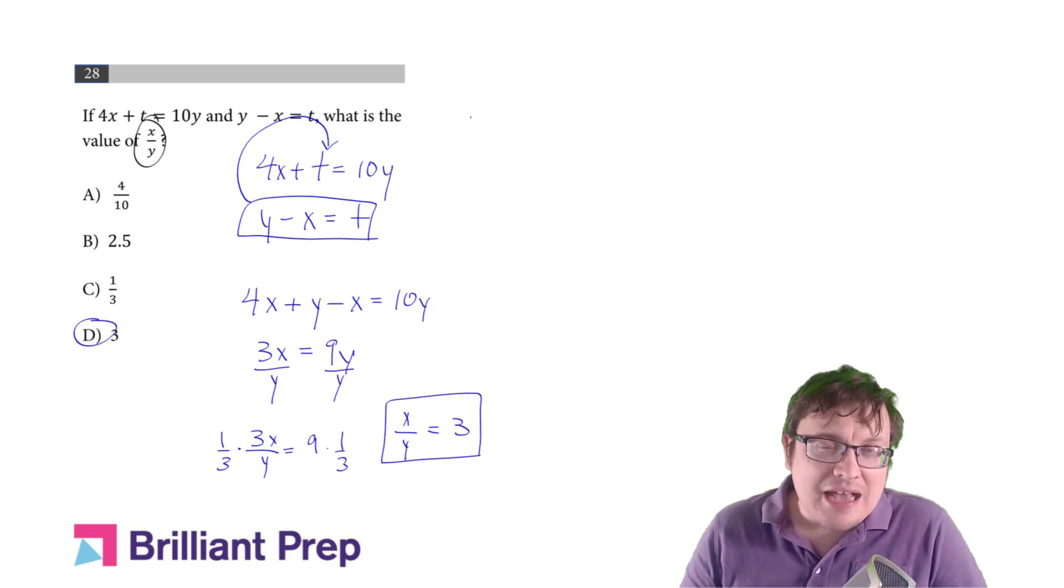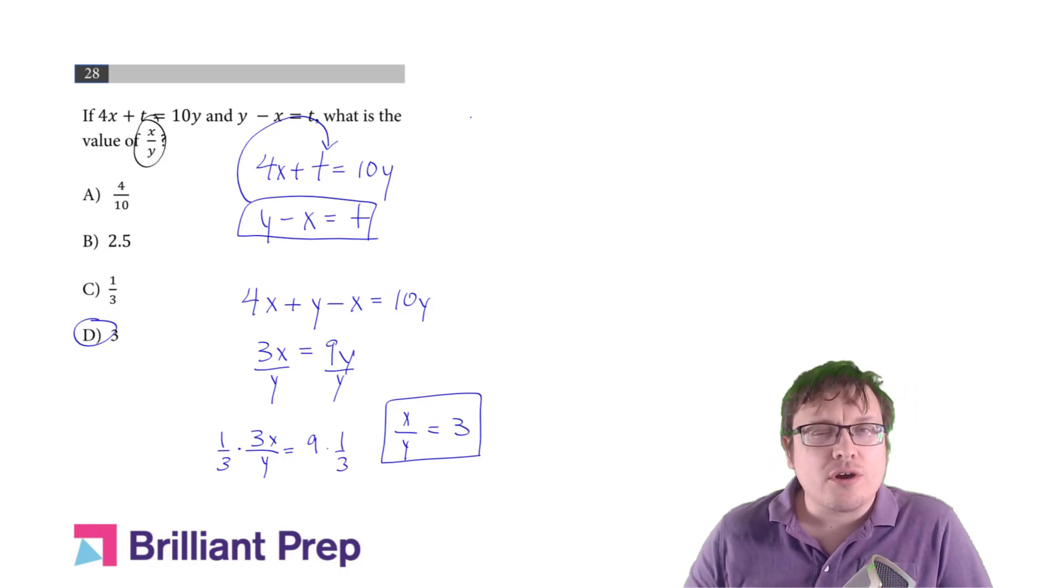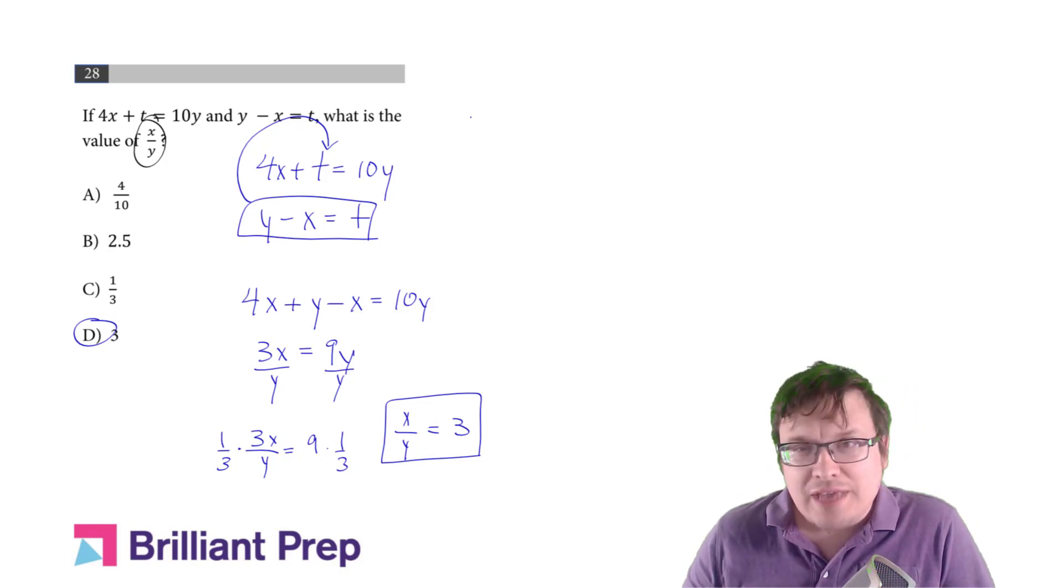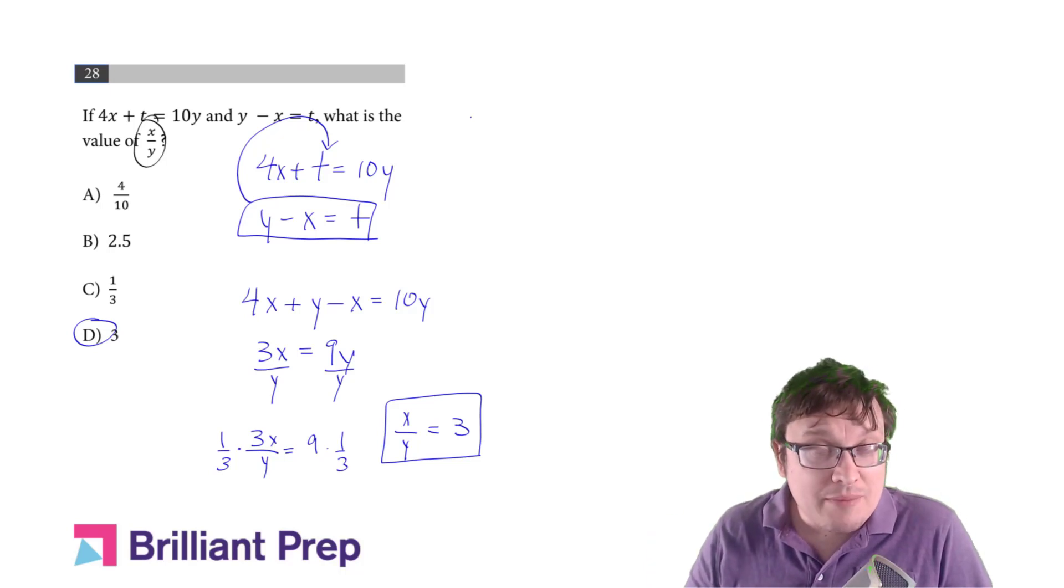So when the SAT math is asking you for something weird, not x but x plus y or x squared plus x or something strange, sometimes there's a shortcut. Go ahead and look for that shortcut. See if there's a substitution you can make or a quick combination of the equations, something that can help get to that answer more directly. It can save you a lot of time and a lot of effort.